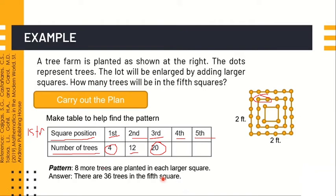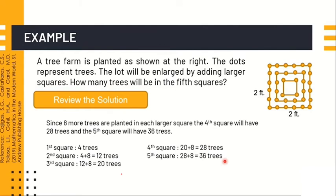The pattern is that 8 more trees are planted in each larger square. The difference of 12 minus 4 is 8, and 20 minus 12 is also 8. So in the fourth square: 20 plus 8 is 28 trees. In the fifth square: 28 plus 8 is 36 trees. Answer: there are 36 trees in the fifth square. Review the solution: since 8 more trees are planted in each larger square, the fourth square has 28 and the fifth square has 36 trees.